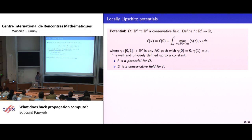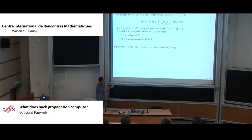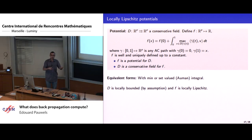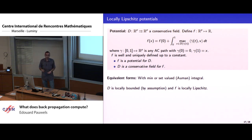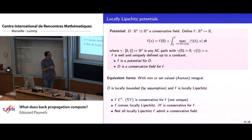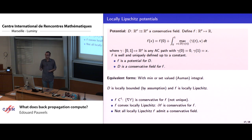We have an equivalent definition with min or with set-valued integration. By assumption D is locally bounded with compact values and has a closed graph, so it is locally bounded. As a result, f defined through this integration process must be locally Lipschitz. I'm only considering locally Lipschitz functions here. Examples: if f is C1, its gradient is a conservative field for f — a good sanity check, though not unique. Many other conservative fields for C1 functions can be defined.